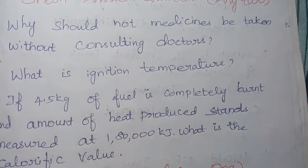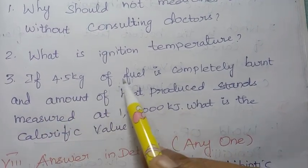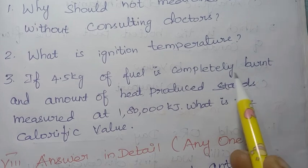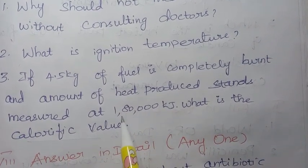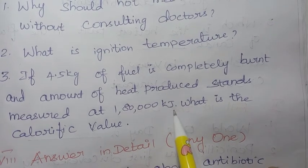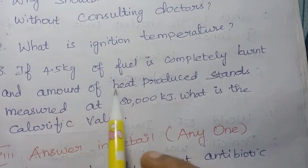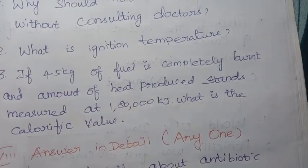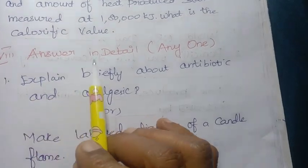Third one: if 4.5 kilograms of fuel is completely burnt and the amount of heat produced measured is 1 lakh 80 thousand kilojoules, what is the calorific value? Use the formula, divide the given values, and write the answer.